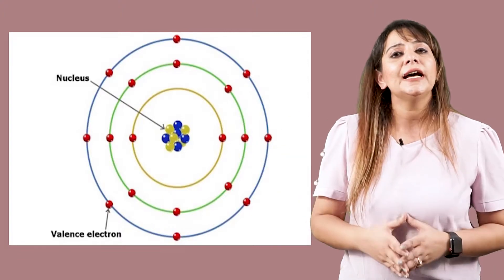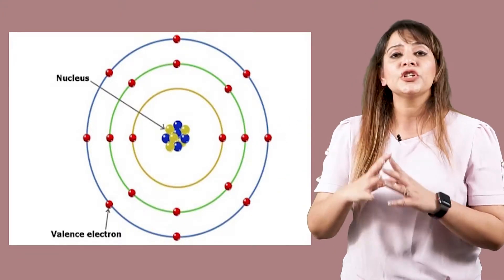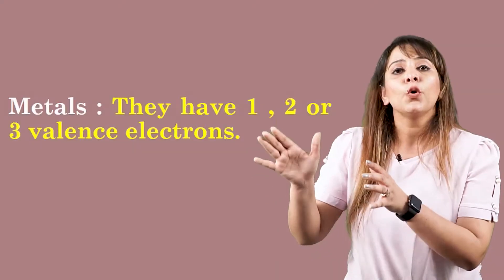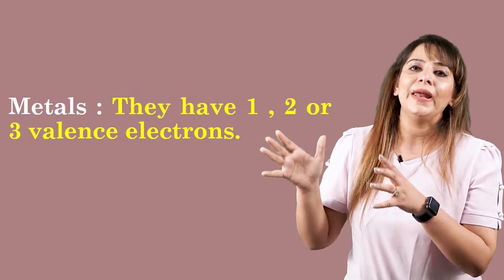We all know that atoms have electrons, protons, and neutrons, and how electrons are arranged in different orbits is described by the electronic configuration. The last shell of an atom is called the valence shell, and electrons in the valence shell are called valence electrons. Metals are those elements which possess one, two, or three valence electrons.